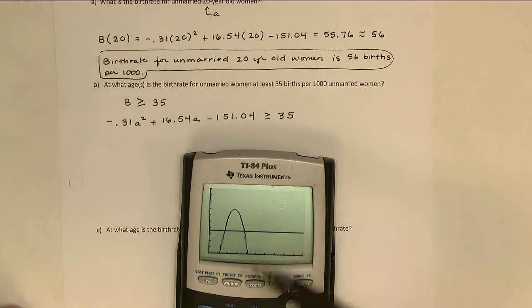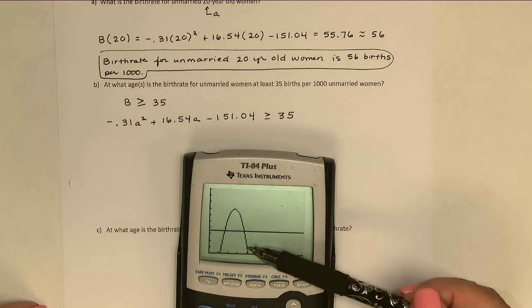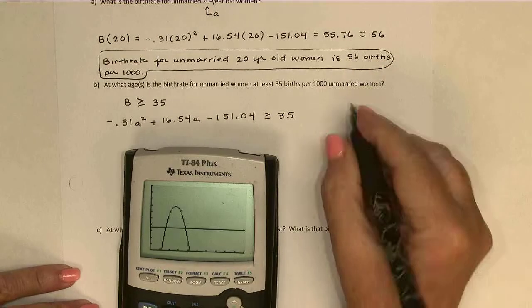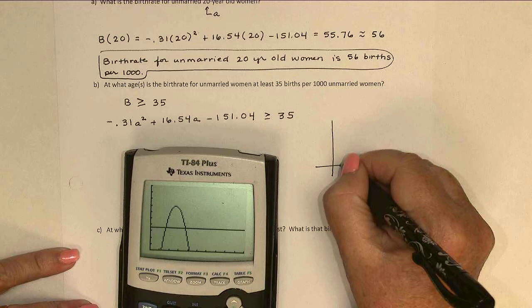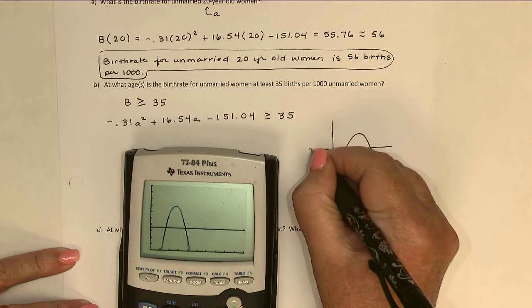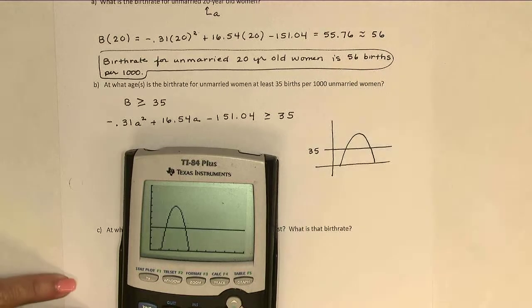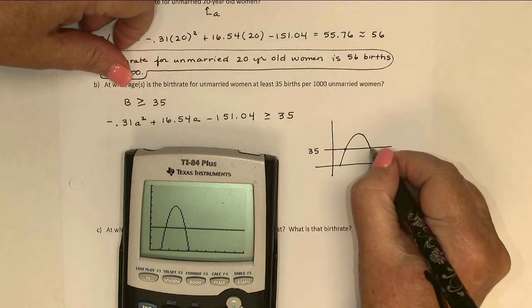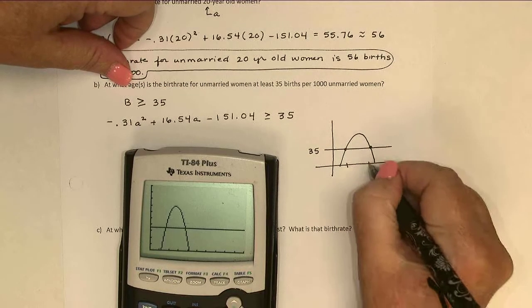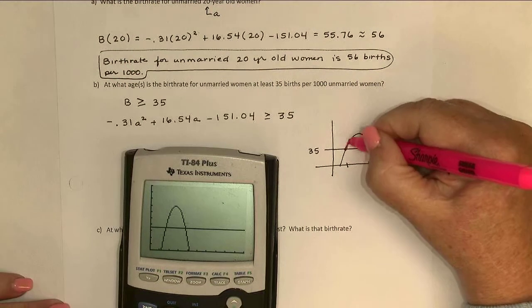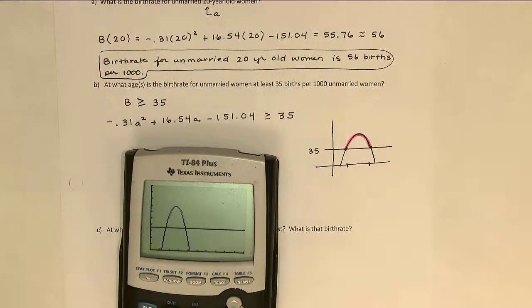So the birth rate is the parabola, and here's the 35, and I'm just going to sketch this. And it looks like the birth rate parabola is above the line between those two x values. So I'm looking for this part that's above 35.